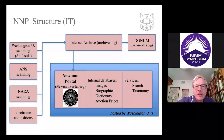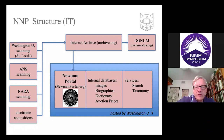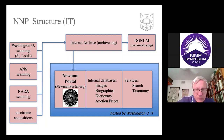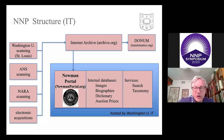All scanning and everything acquired digitally goes into Internet Archive, which is our main repository. Internet Archive archives many other things as well, and we are one of their contributing partners. Then we move to the Newman Portal site directly — all our scanned documents are on Internet Archive, and we also have some databases internally on Newman Portal: our image collections, our biographical collection, the NNP dictionary, and an auction prices realized service. The site itself provides search across all of this.